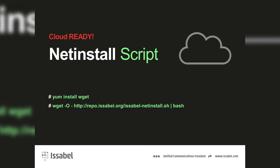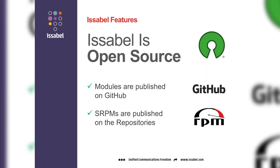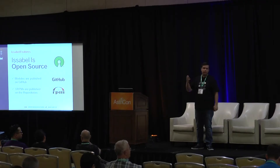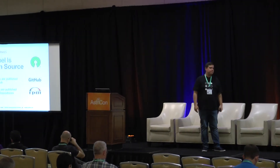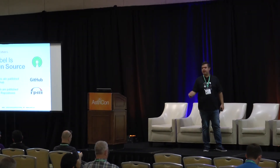The net install script — these are the two lines you need to install Isabel on any CentOS 7-based server. This will install everything. Isabel is open source; all the modules are published on GitHub and the SRPMs are published on the repositories. If you want to do a pull request or a modification, you can. We have a pretty active dev team led by Nicolás, always working on bug fixes and trying to add new features.